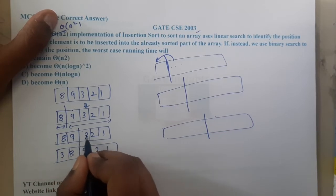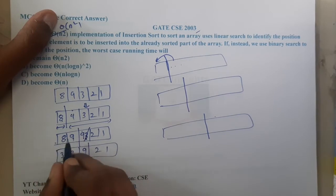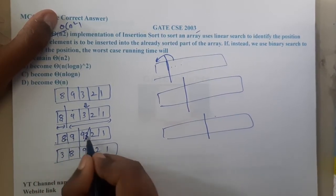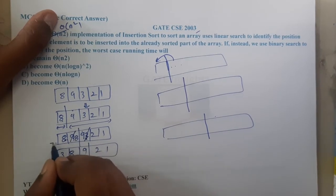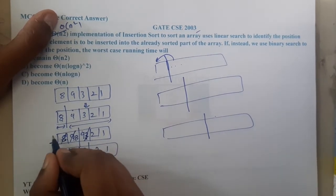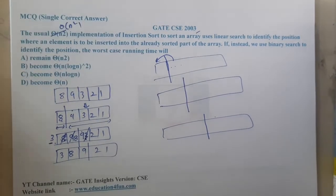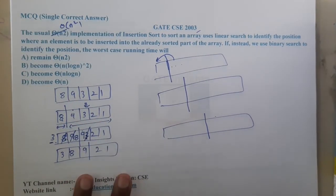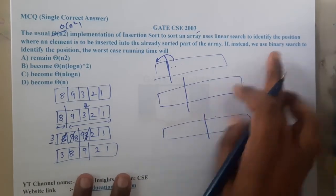I will compare 9 with 3. Is 3 less than 9? Yes, so I will write 9 here and I will keep 9 there only. Again I will compare 8 with 3. Is 3 less than 8? Yes, so I will swap it here. And is there any element before it? No, so I will write 3 here. So in this way the swapping will be done. So here, how am I checking? I am checking linearly, element by element.